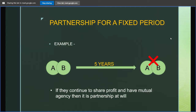Coming to the next type — partnership for a fixed period. Suppose A and B come into a contract and decide they will have a partnership for five years. As soon as those five years end, the partnership comes to a halt. But if they continue to share the profit and have mutual agency, then that fixed period partnership is turned into a partnership at will. So both particular partnership and fixed period partnership have the option to continue as partnership at will.